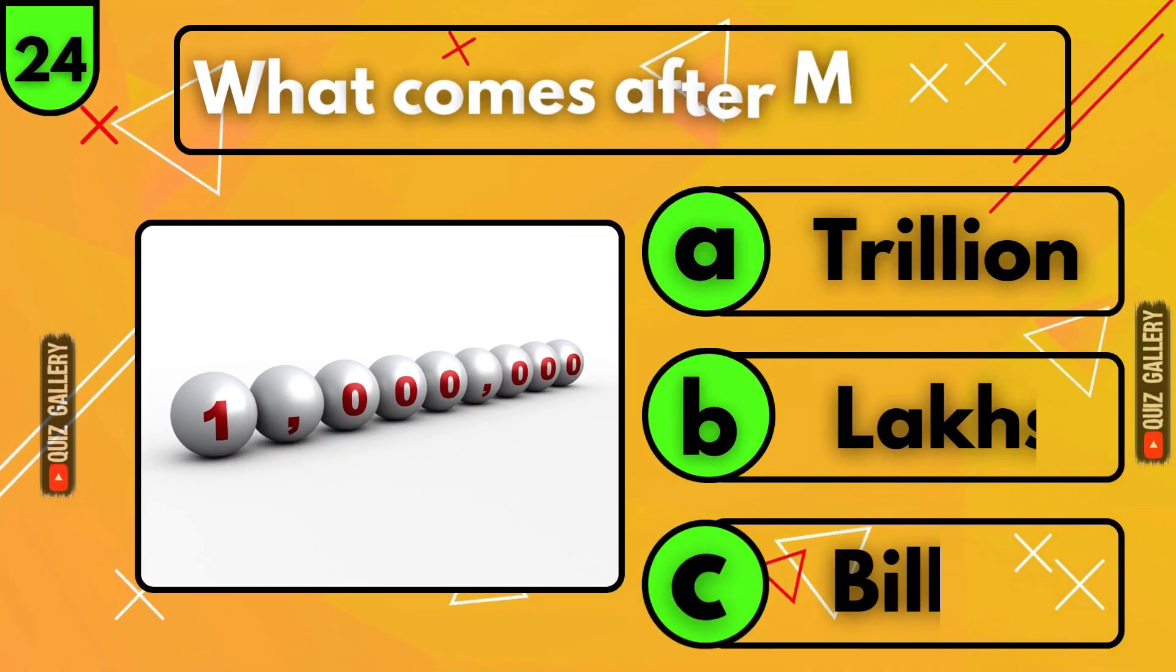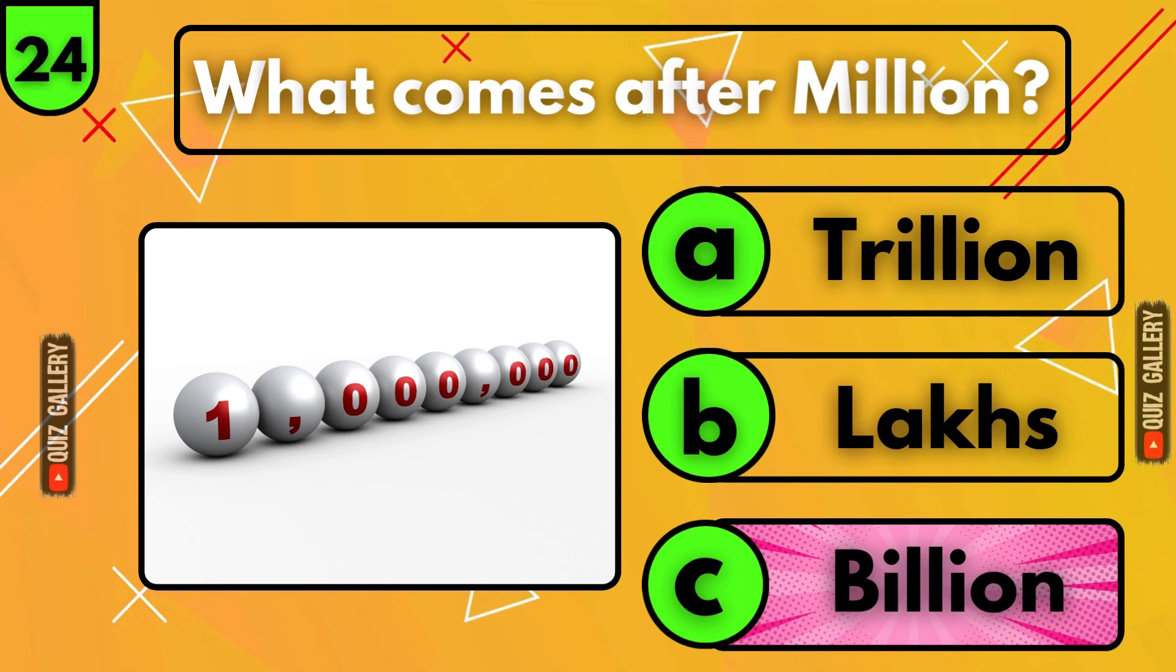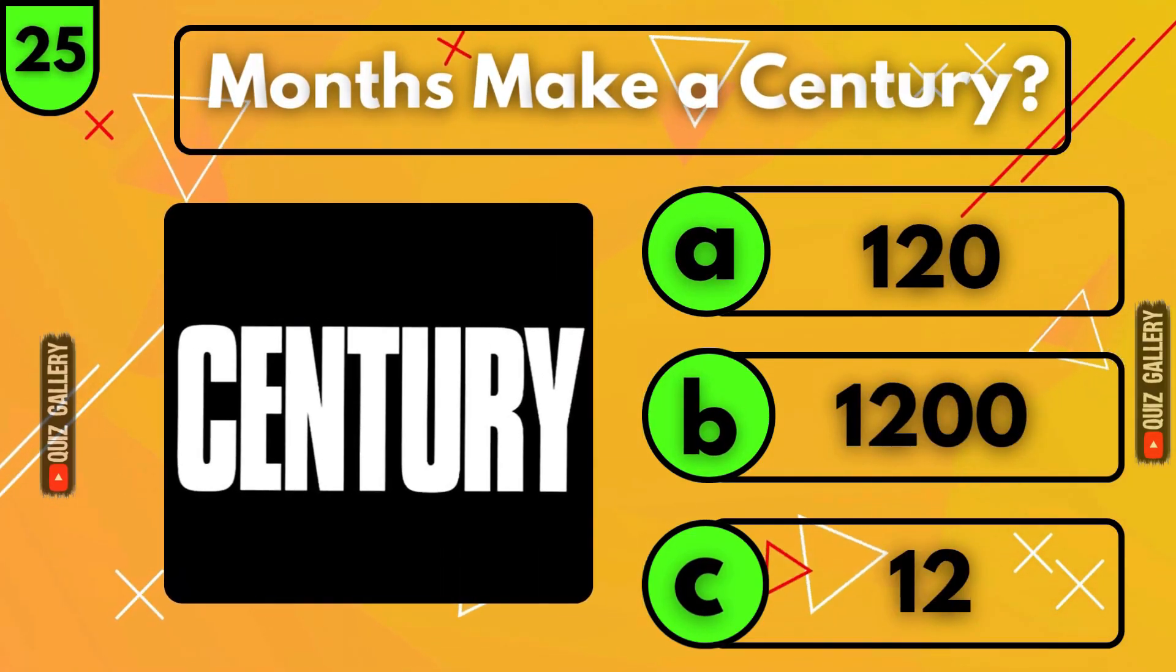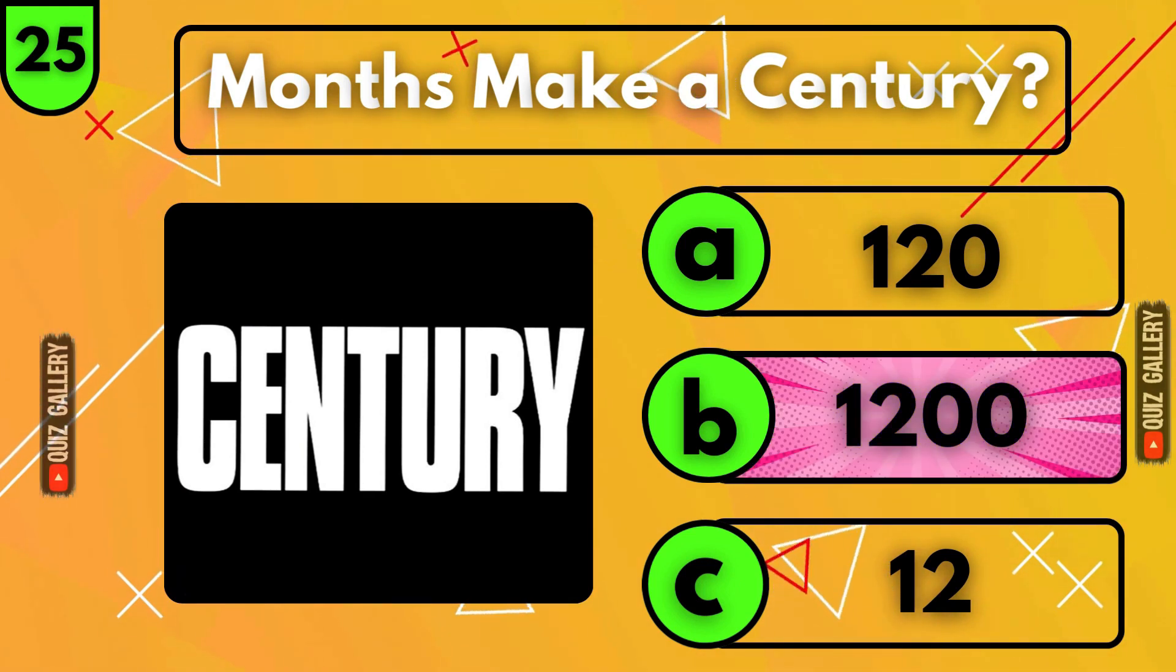What comes after million? It's billion! How many months make a century? 1,200 months!